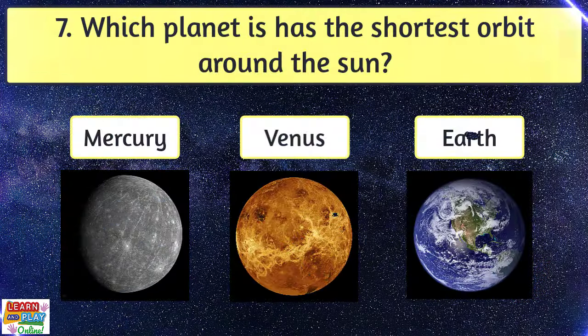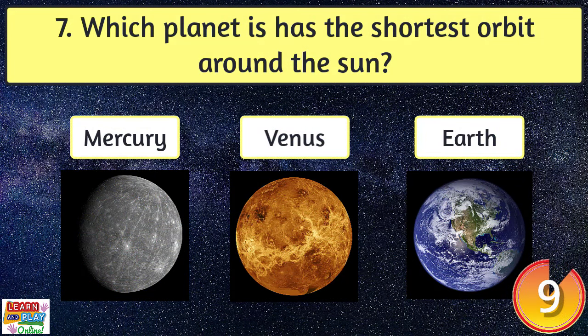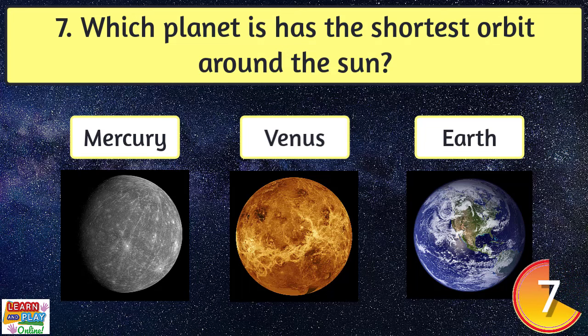Question 7. Which planet has the shortest orbit around the Sun? Mercury.